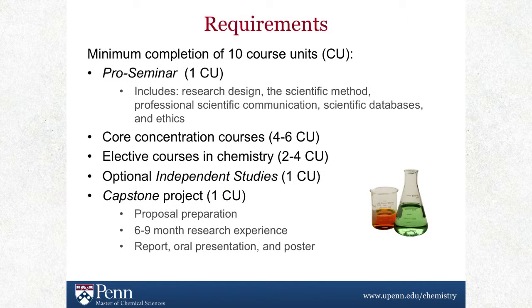To obtain the degree, students must complete 10 courses or CUs, the equivalent of 30 credit hours, which typically takes two years for a full-time student and four years for a part-time student. The courses include a professional development course, four to six PhD level courses in your concentration of choice, two to four electives, and a capstone research experience.